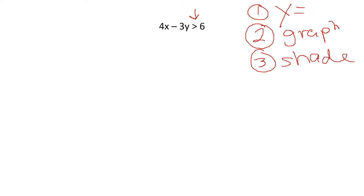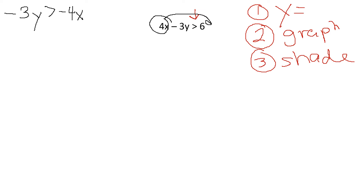The first step is to put this into Y equals form. If you know how to graph a line, you should be able to do this just fine. For right now, we're going to pretend the inequality symbol is an equal sign. I'm going to move my understood plus four over. I need it in Y equals MX plus B form.